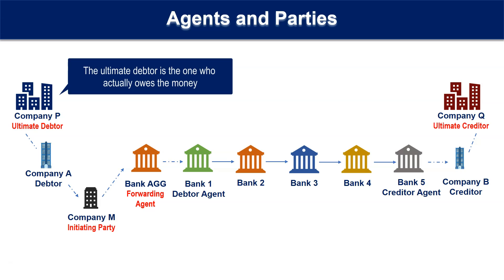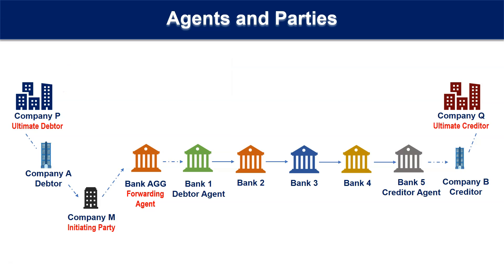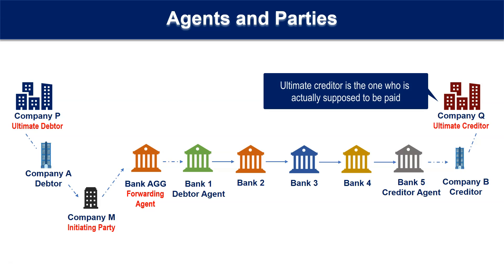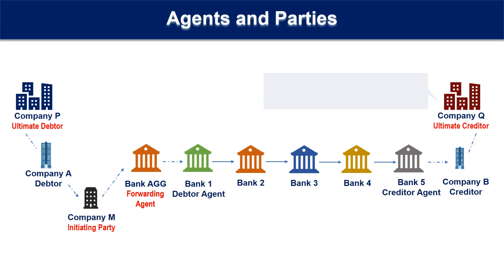The ultimate debtor is the one who actually owes the money. The ultimate creditor is the one who is actually supposed to be paid.